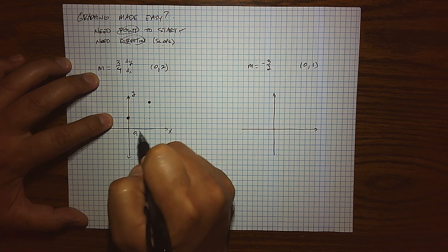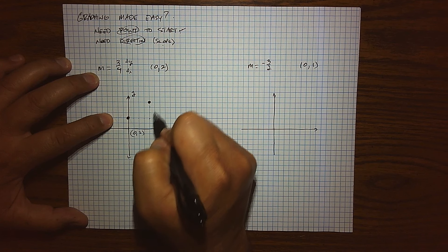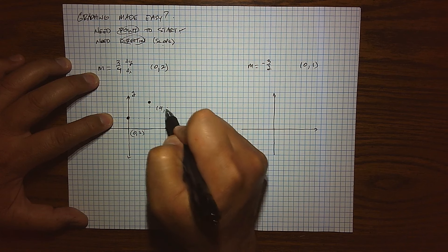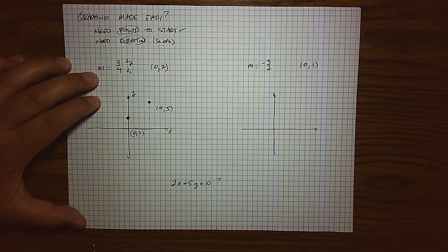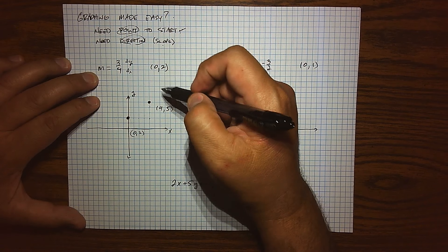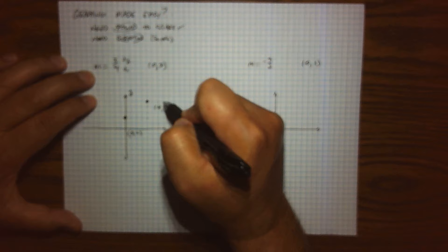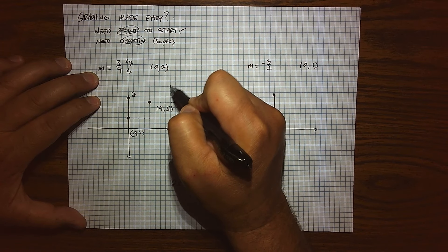So (0, 2) is a data point, and then it looks like we moved over to 4, what would that be, 2, 3, 4. It looks like (4, 5) would be another data point on this graph. Since I have 3 points, you can just keep moving, 1, 2, 3, 4, 1, 2, 3 to find another data point.